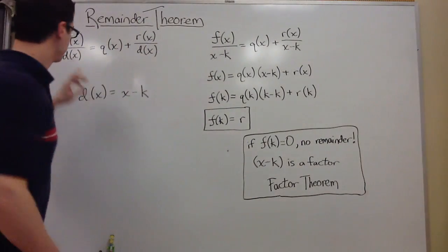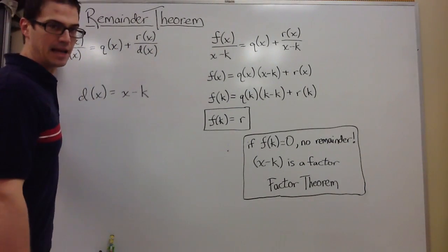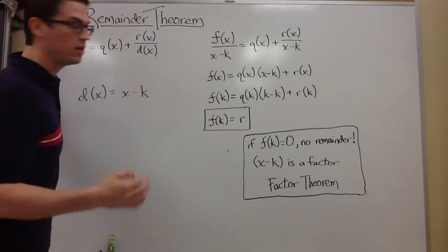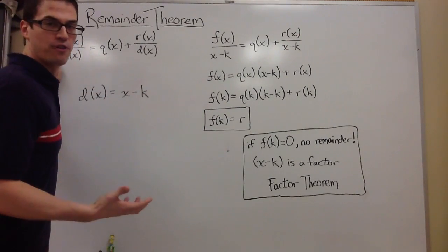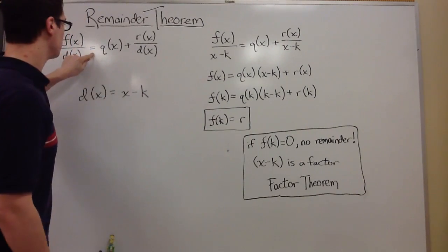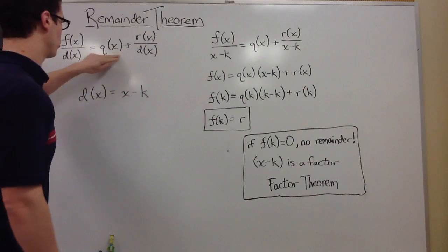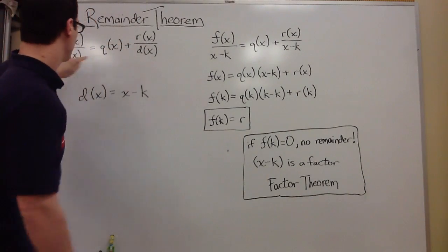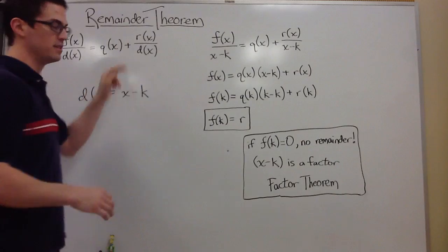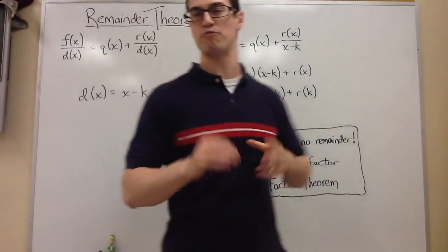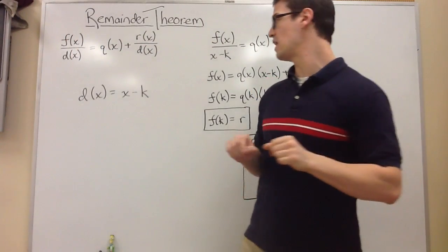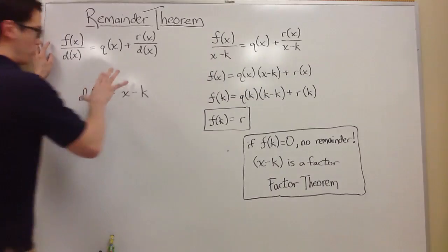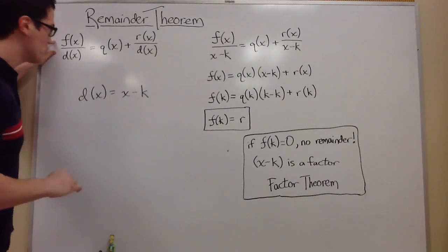Say you're dividing polynomials. Here I have f of x and d of x. f of x is going to be our polynomial, and we're dividing it by some other function, d of x. And it's equal to what you guys are used to: you get some quotient, this q, plus whatever the remainder is, this r, divided by what your d of x is.